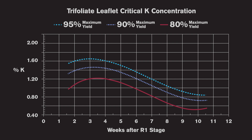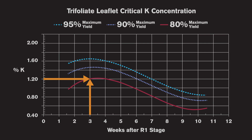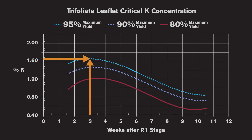For example, a trifoliate leaf sample taken three weeks after the beginning of the R1 growth stage can be compared to our dynamic critical concentration for various yield goals. A trifoliate leaf concentration of 1.2% would result in roughly 80% of maximal soybean yield, whereas a trifoliate leaf concentration greater than 1.6% potassium would suggest that maximal soybean yield can be achieved as far as potassium nutrition is concerned.